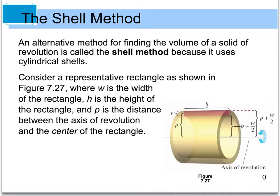Another method that can be used to find the volume of a solid that's being revolved around a particular axis is called the shell method. The reason for this is because we are actually going to be creating something like a cylindrical shell or a tube.